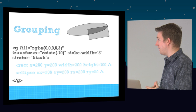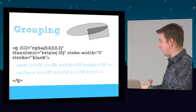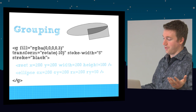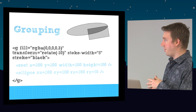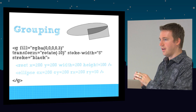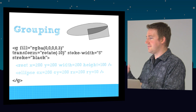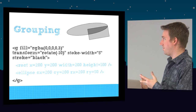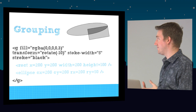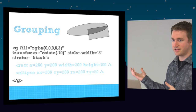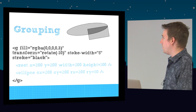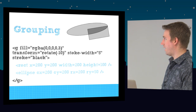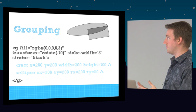Grouping — you take these elements, these primitives, and wrap them in a G tag, which is basically just grouping them. When you set a property to the group tag, it will set that property to all its children. In this case both shapes are filled with black at 0.3 opacity, so their intersection point is 0.6 opacity. The entire group is rotated by negative 10 degrees, and both have a stroke width of 5 with a black stroke.